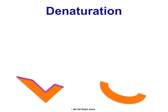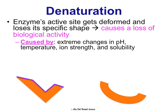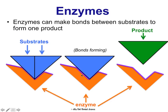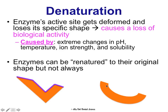The shape of the active site on the enzyme is very important. If denaturation occurs, the enzyme's active site gets deformed and loses its specific shape, causing it to lose its biological activity — it would no longer be able to do what it was designed to do. Denaturation is caused by extreme changes in environment, whether that's pH, temperature, ion strength, or solubility. Sometimes enzymes can be renatured and restored back to their original shape, but not always and honestly not usually.